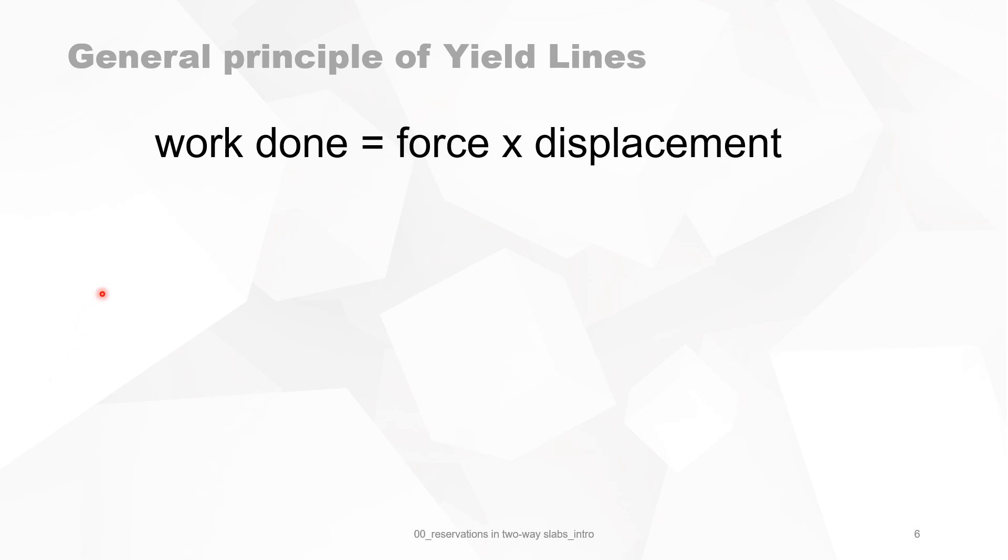The work done is of course equal to the force times the displacement in the direction of the force. So for a load, for instance a vertical load, it will be n times delta. For a bending moment we have a similar thing: it is the bending moment m multiplied by the angle of rotation.